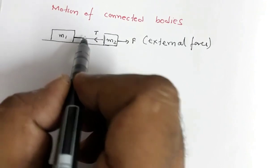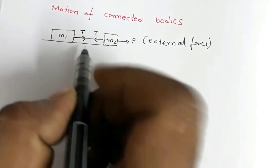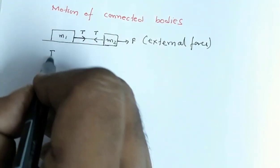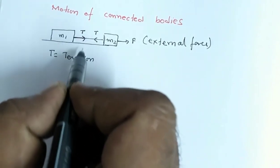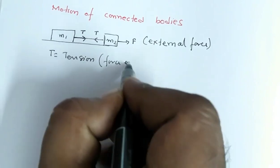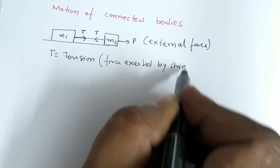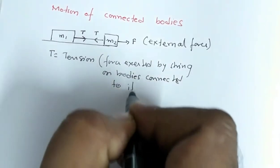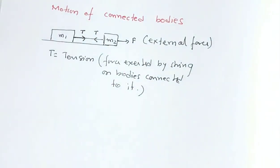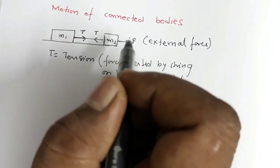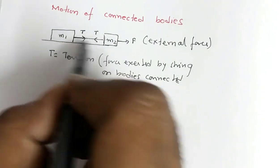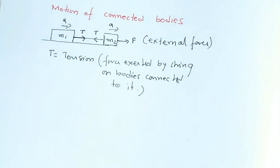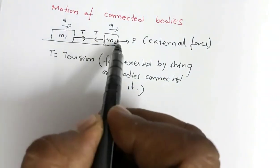The same string is connected to mass m1, so it will pull m1 with the same force T in the opposite direction. T is the tension and it is the contact force in this case — the force exerted by the string on the bodies connected to it. Suppose the blocks are acted upon by such a force that the string remains tight and the two blocks move with the same acceleration.